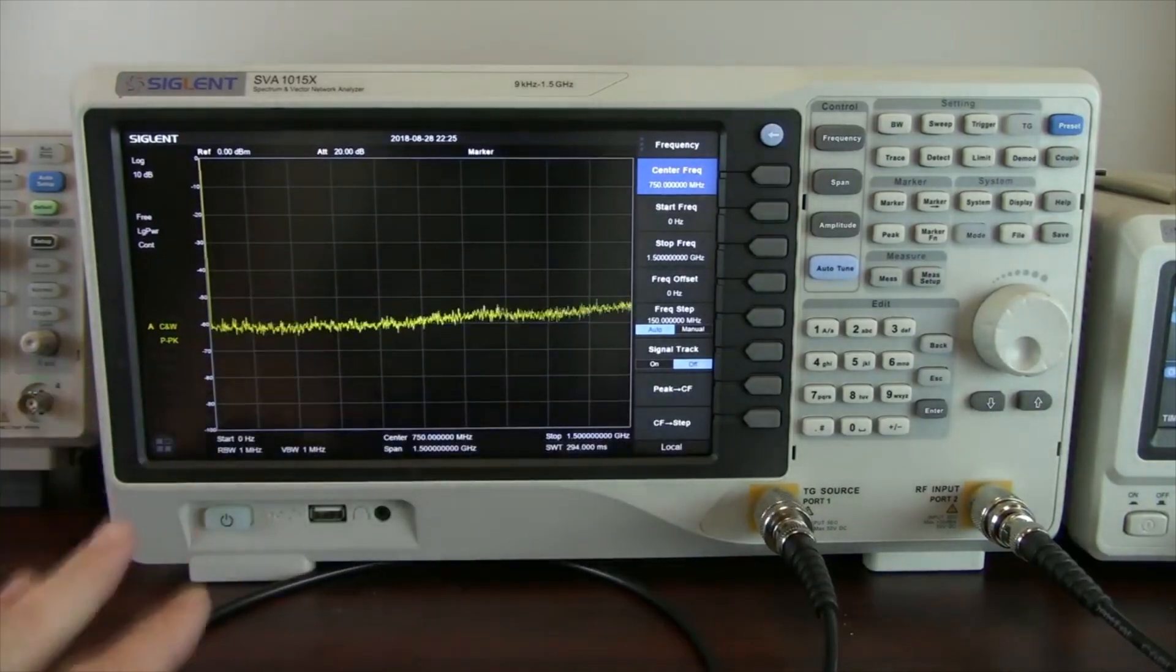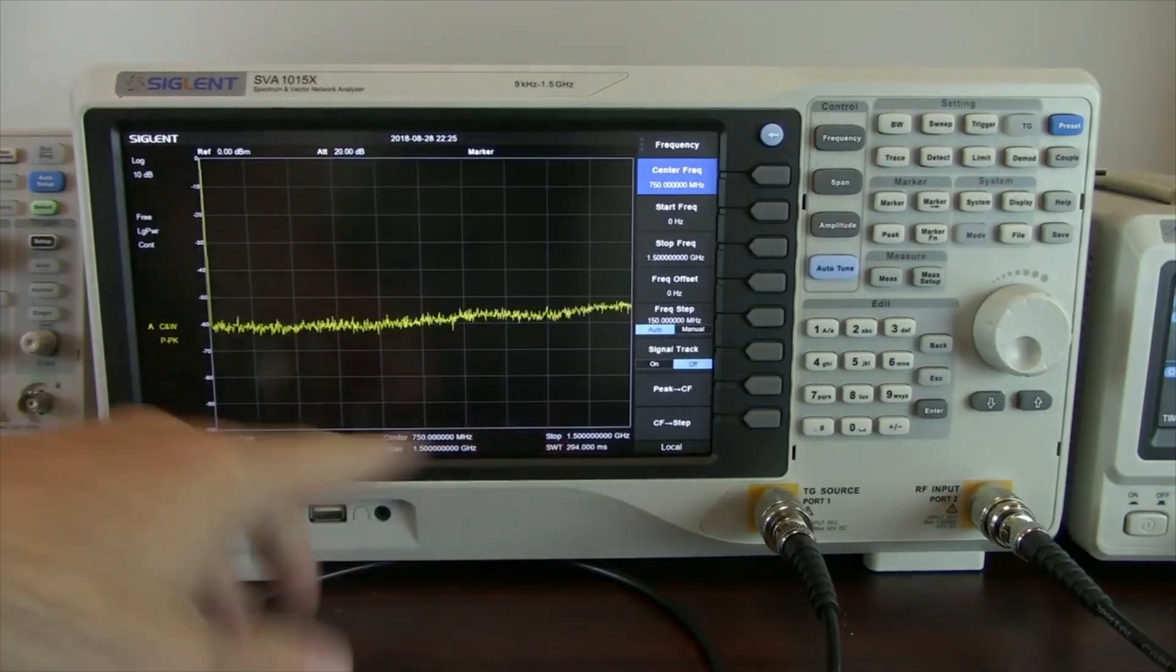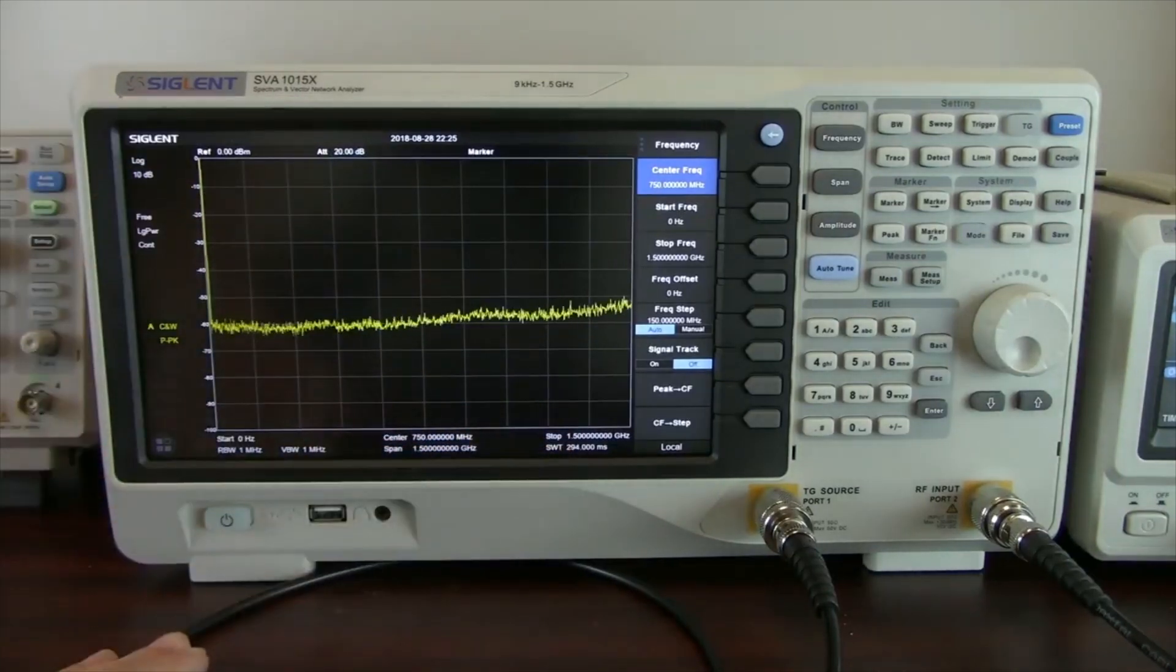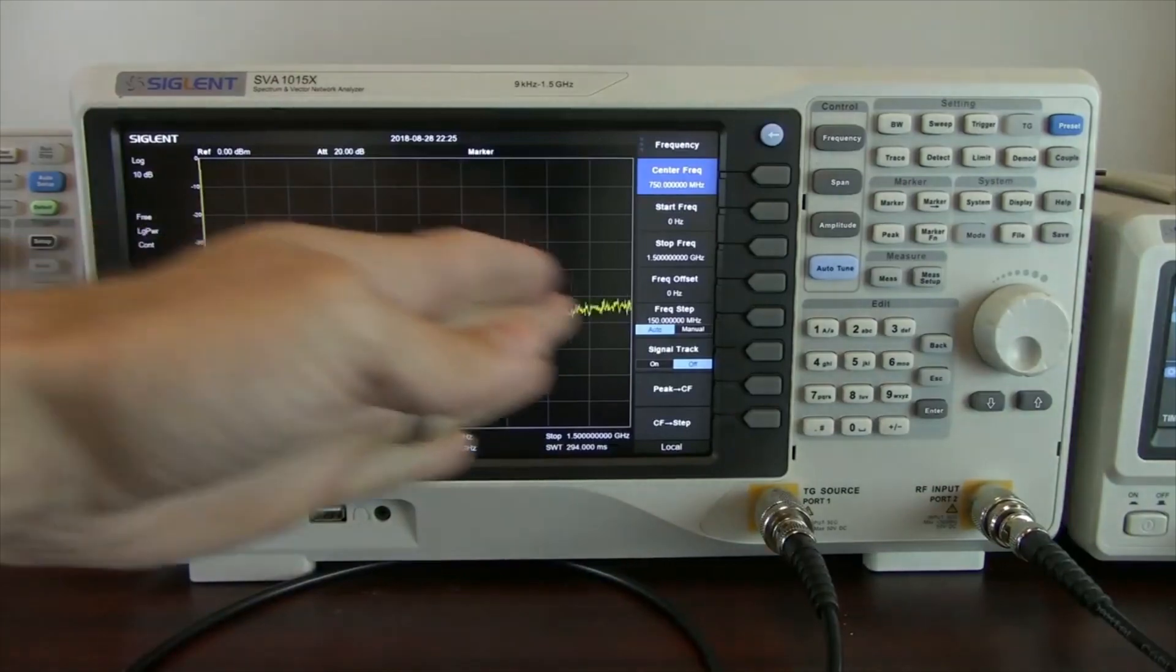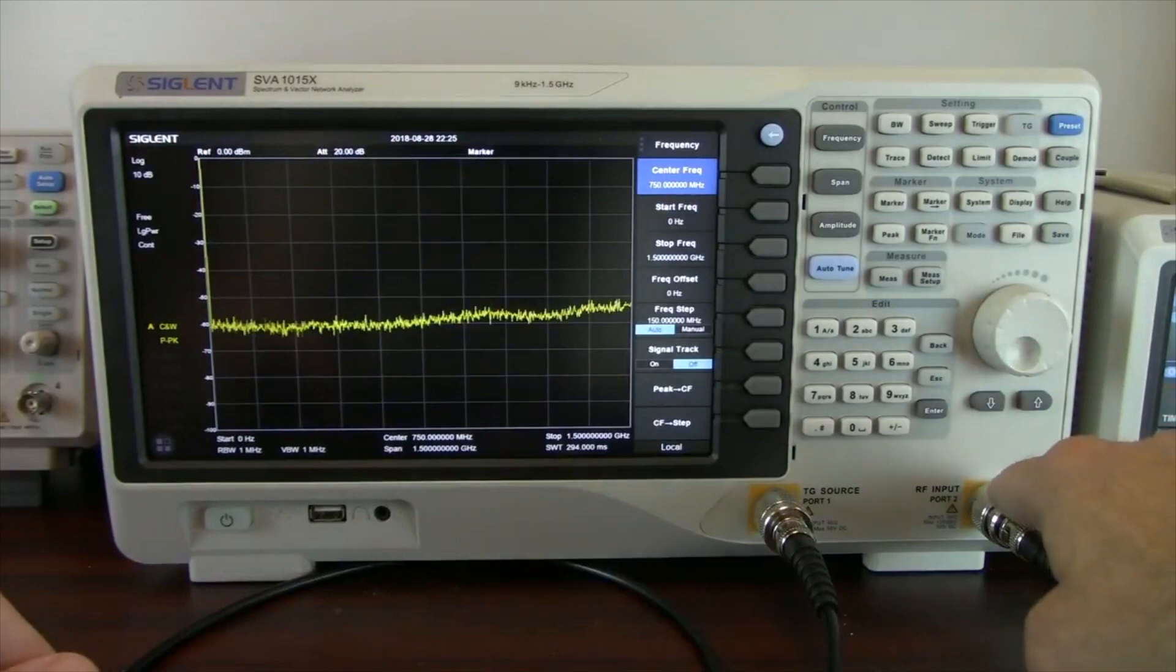This is where the output frequency is going to come, and it's going to go from our start frequency to our stop frequency. So the output signal frequency is going to sweep from start to stop, and then we're going to measure it with the RF input.